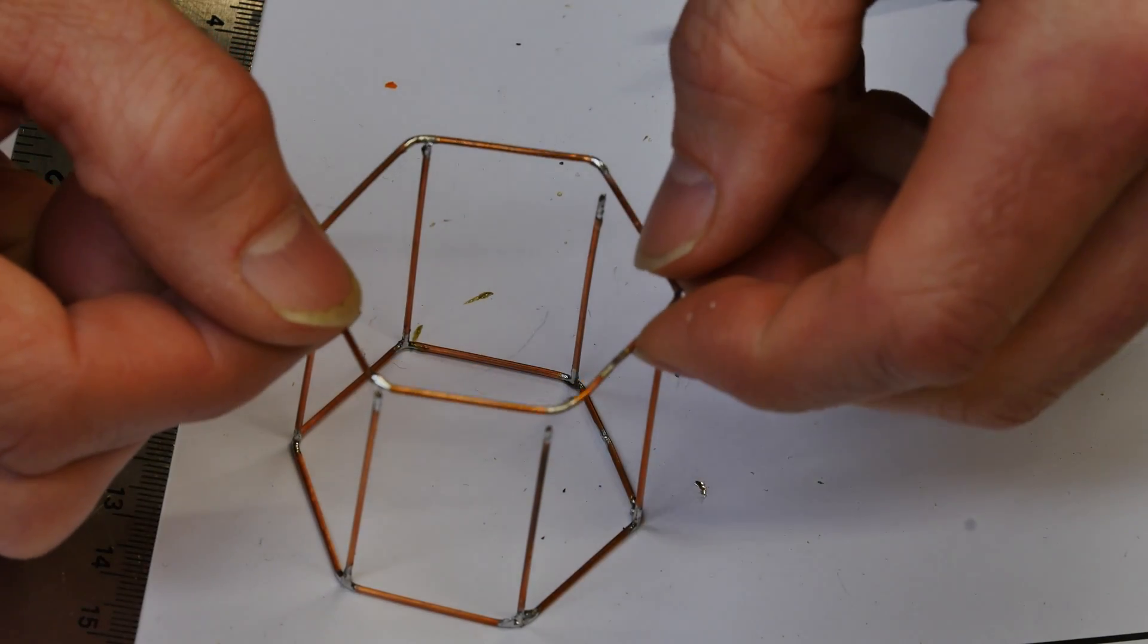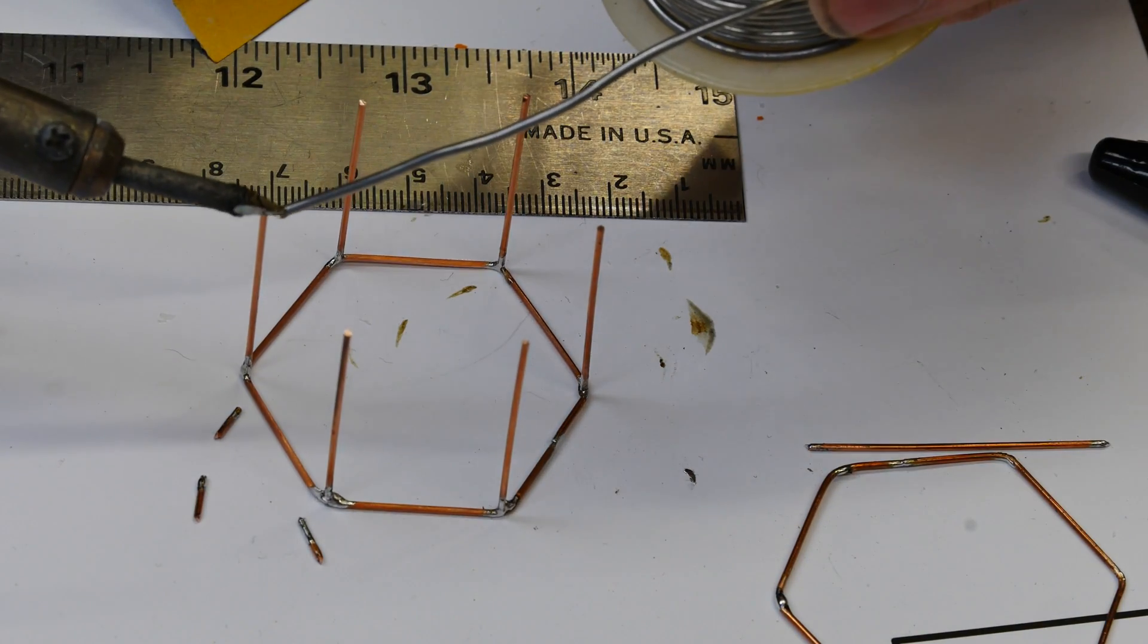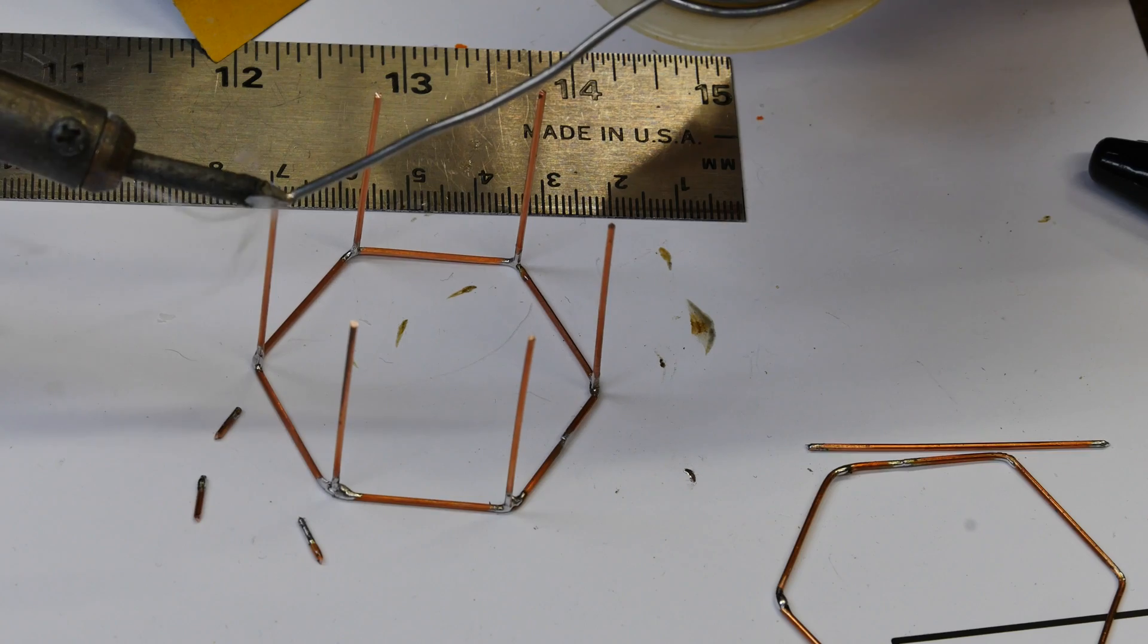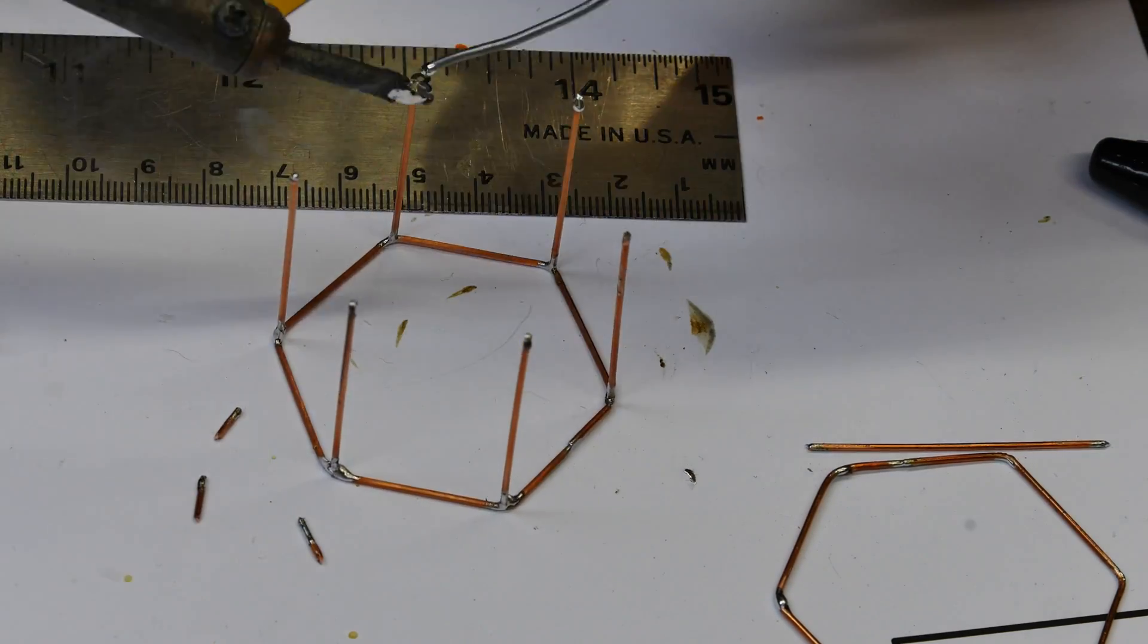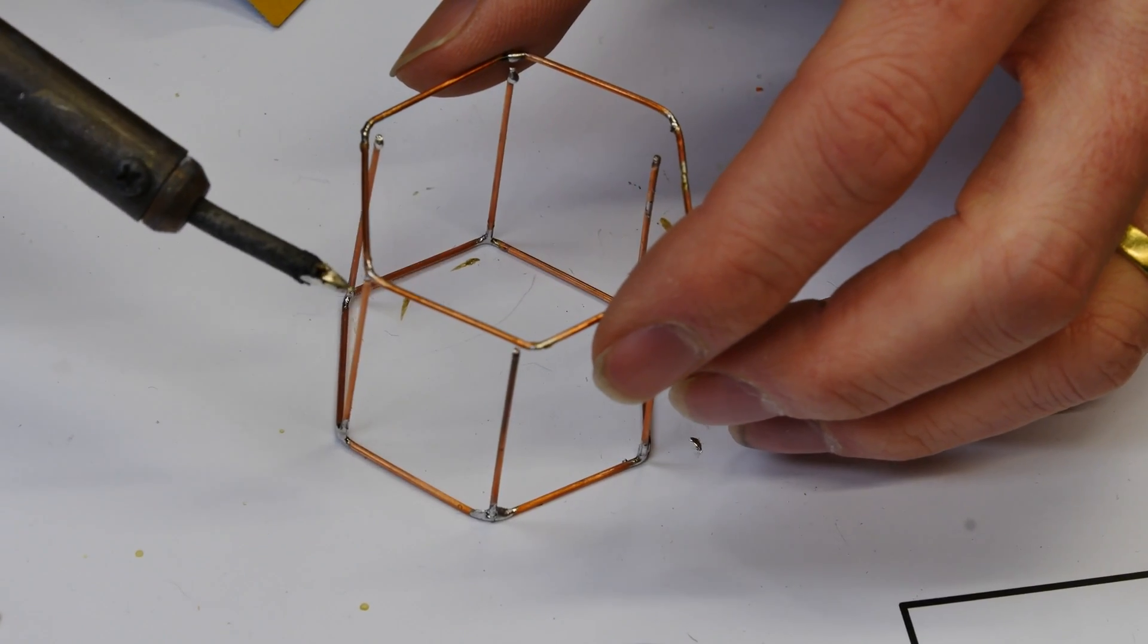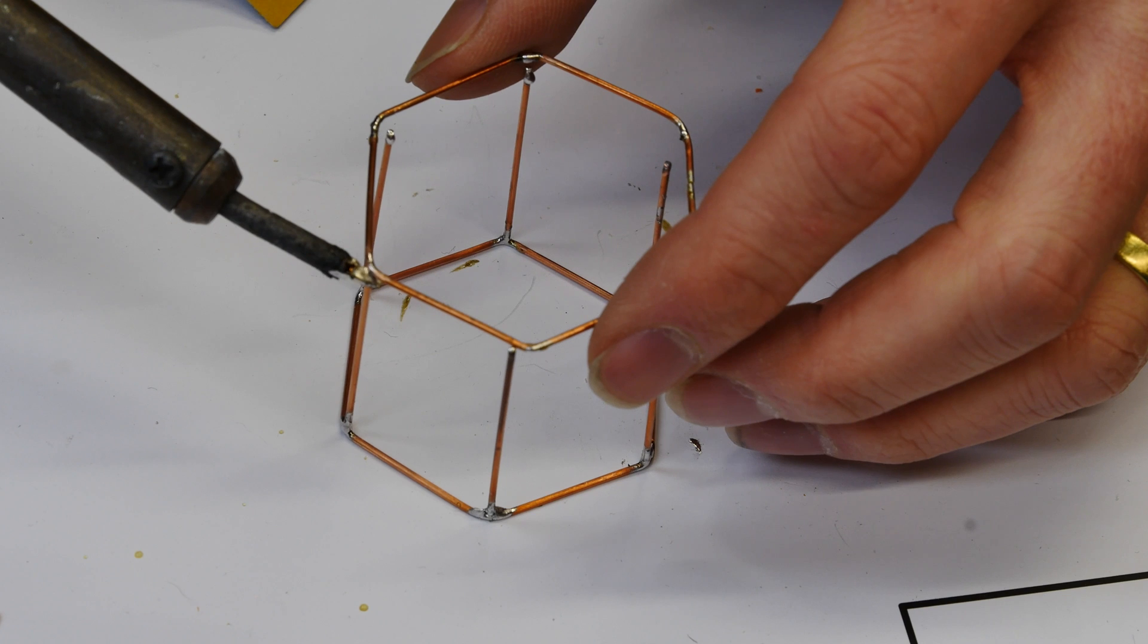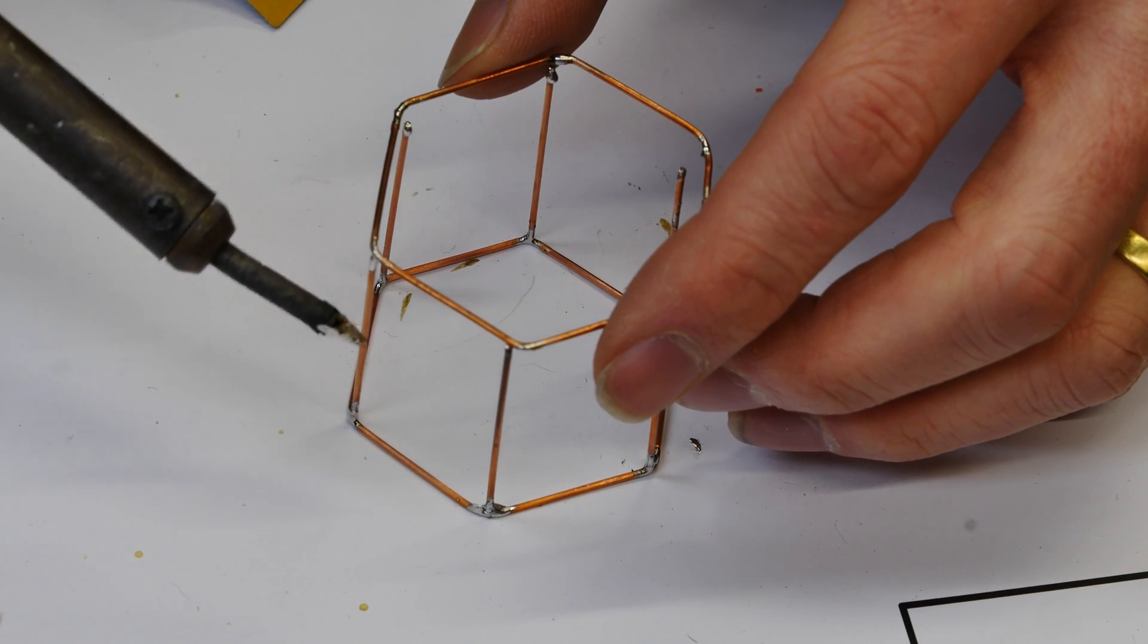Let's add the other hexagon to make the other side and I've actually trimmed them down because I didn't like the proportions of that. And then I'm gonna retin the ends of each of these legs. Remember you need to remove the oxidation with some sandpaper to get your solder to stick well.